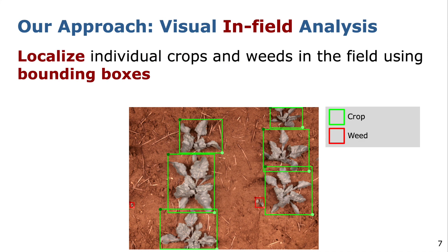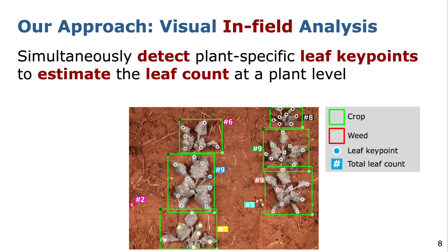In our work we implemented a vision-based model which can be applied to real-world field data captured by agricultural robots. First, we localize crops and weeds in the field by predicting their corresponding bounding boxes. Simultaneously, we predict the location of leaf keypoints and assign them to individual plants, which allows us finally to estimate the total leaf count at a plant level.